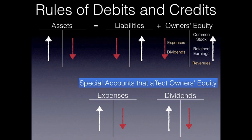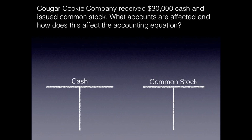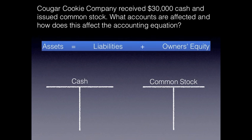Now let's look at an example using T-accounts. Cougar Cookie Company received $30,000 cash and issued common stock. What accounts are affected and how does this affect the accounting equation? I'm going to give you the accounting equation — please press pause on your player right now and attempt to figure out what accounts are affected and how the T-accounts are affected, then come back and we'll talk about it together.